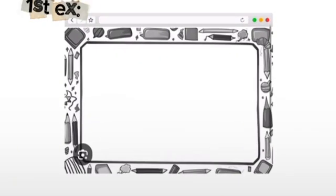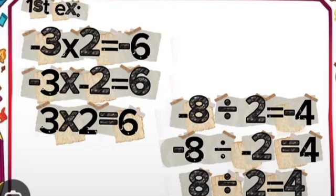So, first example. Negative 3 times positive 2, the answer will be negative 6. As you can see, the signs of the numbers are different.